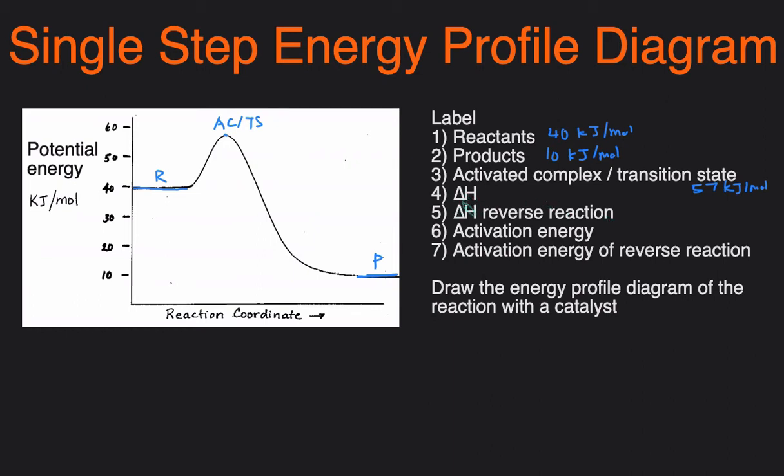The delta H or the change in enthalpy of the reaction is the energy of the products minus the energy of the reactants, and that's reflected by the gap between the reactants and products. So this would be 10 minus 40, which would be negative 30 kilojoules per mole, making this an exothermic reaction.